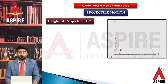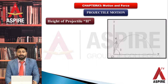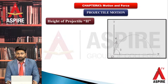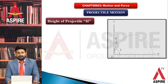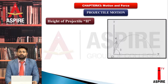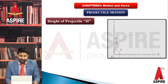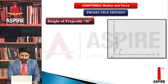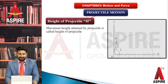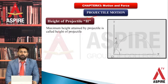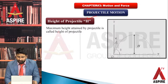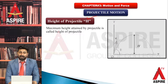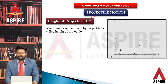First of all, height of projectile. Students, if any projectile is launched with initial velocity vi at angle theta — the angle of projection — then the vertical distance, which means the height of projectile, represented by h, is defined as the maximum height attained by the projectile. If you look at the diagram, it will be the height of projectile. Now we will derive the formula.